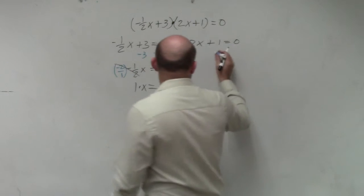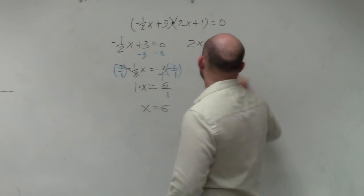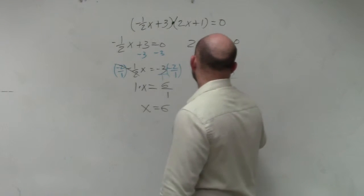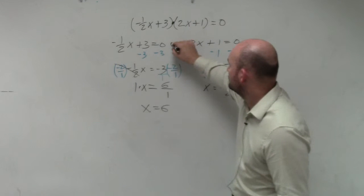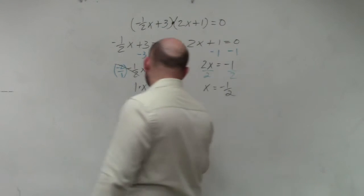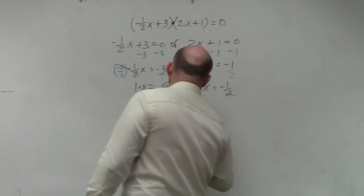Over here, just subtract 1. So you're left with 2x equals negative 1, and then divide by 2, x equals negative 1 half. So it's those two. So your solution set in order would be negative 1 half, 6.